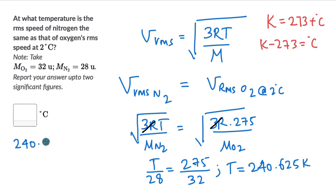And when you do that, 240.625 minus 273, this comes out to be equal to minus 32.375 degrees Celsius. We need to report the answer to two significant figures. So we can do that and we can write this as minus 32 degrees Celsius.